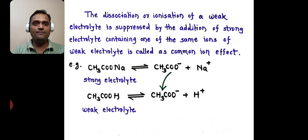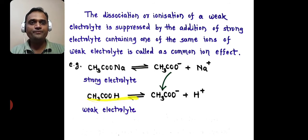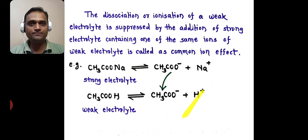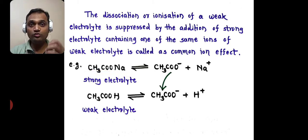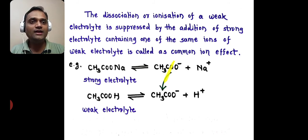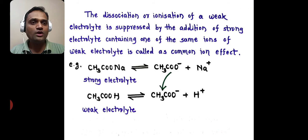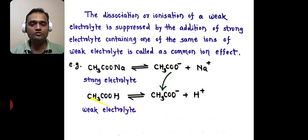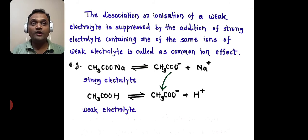Consider another example. Suppose we have acetic acid — it is also a weak acid. It undergoes partial ionization to form CH3COO− (acetate anion) and H+. If we add aqueous solution of sodium acetate to the aqueous solution of acetic acid — sodium acetate is a strong electrolyte, so it undergoes almost complete ionization to form acetate ion and Na+. We now have a common ion: the acetate anion combines with H+ and again forms CH3COOH. So the ionization of acetic acid is suppressed. This is the common ion effect.